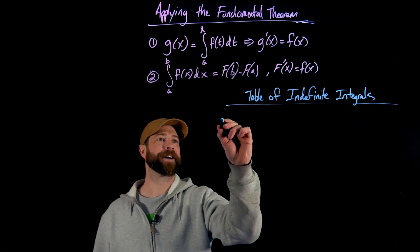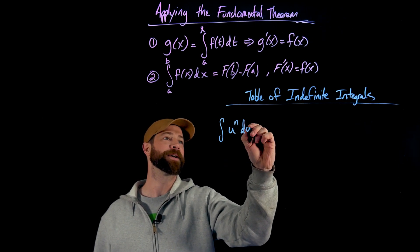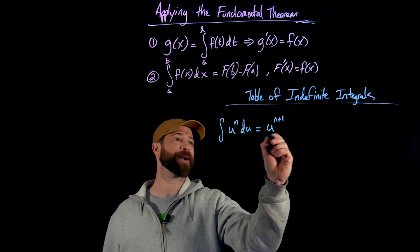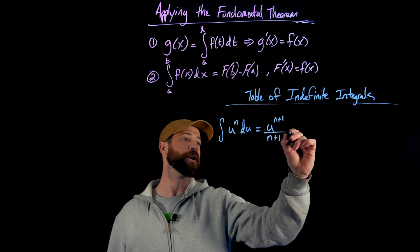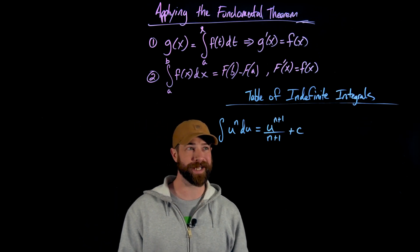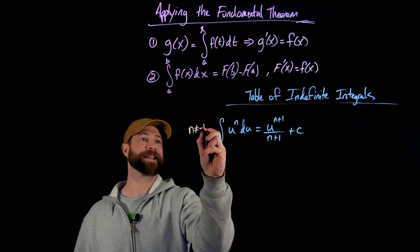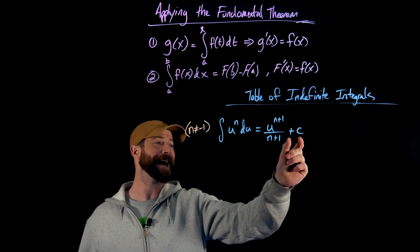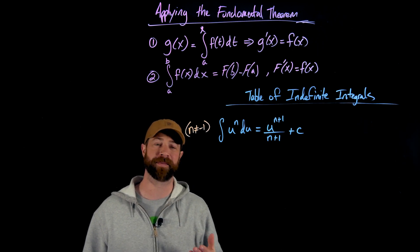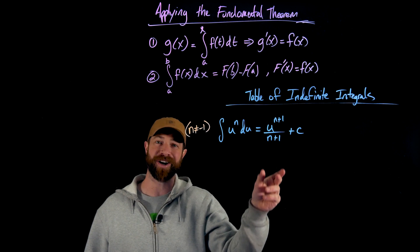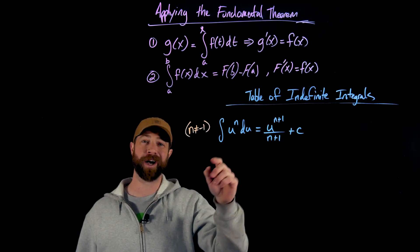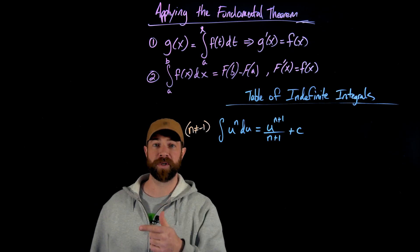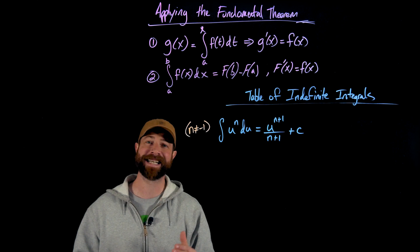The first example on this table is the case of u to the n, integrating with respect to u. This is simply the anti-power rule: we add one to the exponent and divide by n plus one, and we always get plus c. It's important to note that n cannot be negative one — it's true for any constant exponent except negative one. We always add plus c because anything with an arbitrary constant, when differentiated, gives back u to the n. When evaluating a definite integral, the plus c cancels out, so we don't need to worry about it.